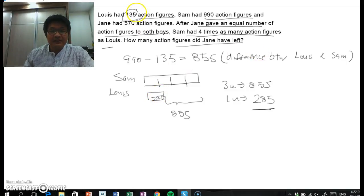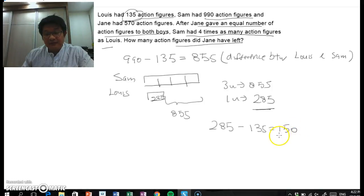Initially, Louis had 135. So what I'm going to do, I'm going to take this 285, I'm going to subtract away this 135, and I'm going to get 150. This is the number that Louis received from Jane. Well, it's going to be the same for Sam.